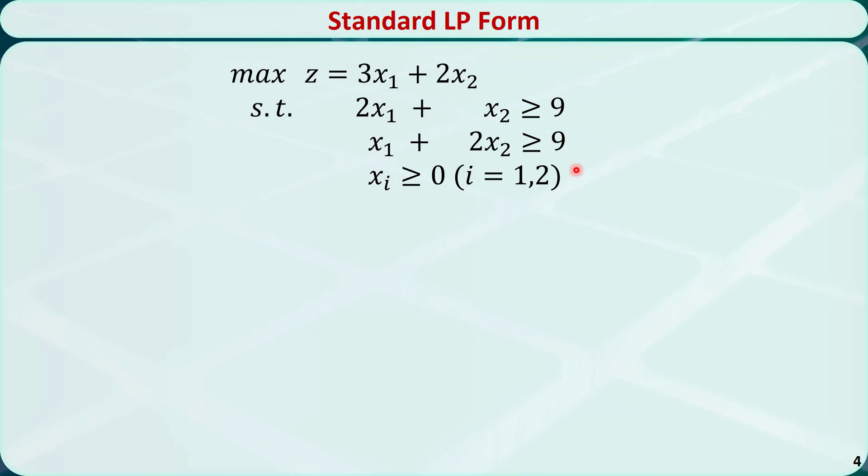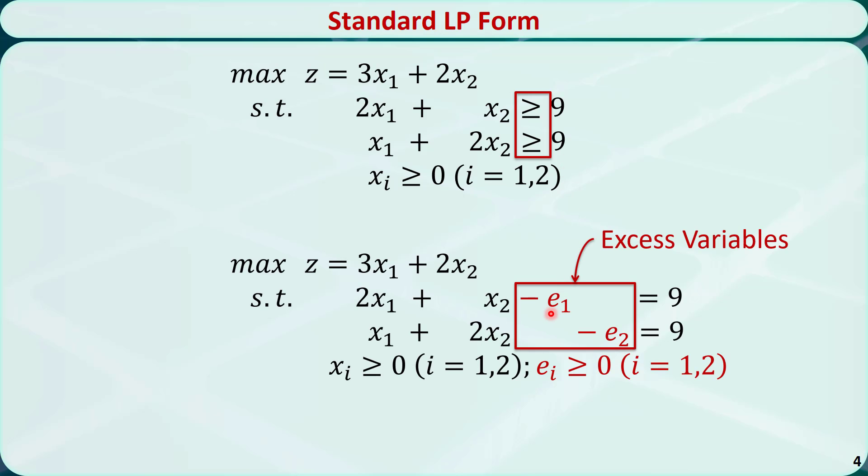What if these two constraints both have a greater than or equal to sign? In this case, we need to minus two variables, E1 and E2. They are called excess variables. Both E1 and E2 are greater than or equal to 0.